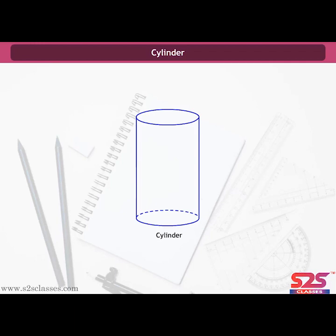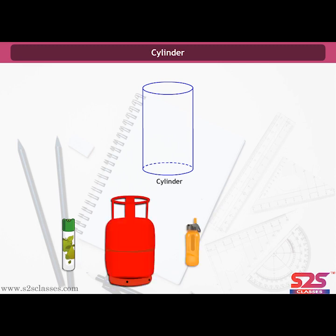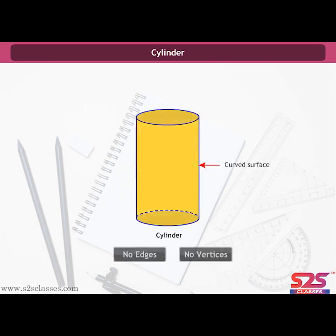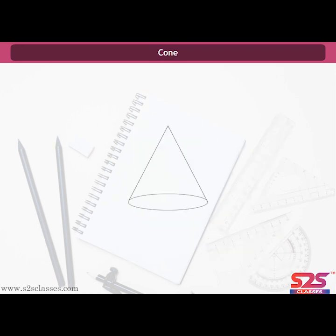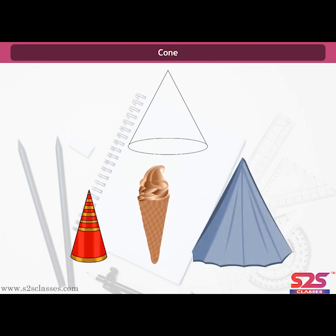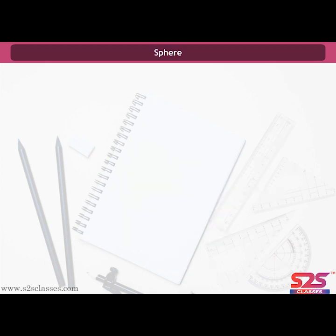Cylinder. Examples of cylindrical shapes include a deodorant bottle, a gas cylinder, a water bottle, and a wooden log. A cylinder has two circular faces — one at the top and one at the bottom — and a curved surface. Cone. Examples of a cone are a birthday cap, an ice cream cone, and a tent. A cone has a circular base, one curved surface, and one vertex.